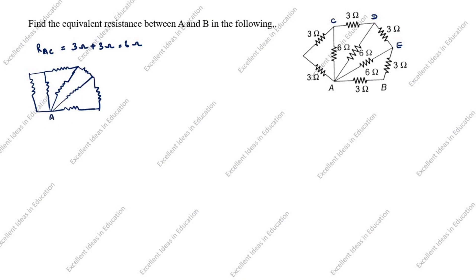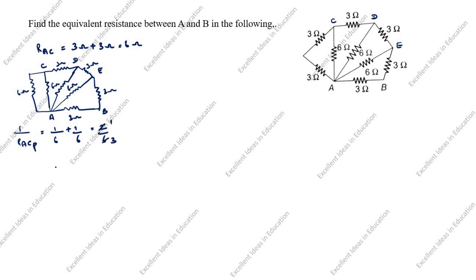The redrawn circuit has nodes A, C, D, E, B with resistances 3 ohm, 6 ohm, 6 ohm, 3 ohm, 3 ohm, 3 ohm, 3 ohm, 6 ohm. Next we see A-C: the resistors are in parallel. 1/R_AC_parallel = 1/6 + 1/6 = 2/6, so R_AC_parallel = 3 ohm.